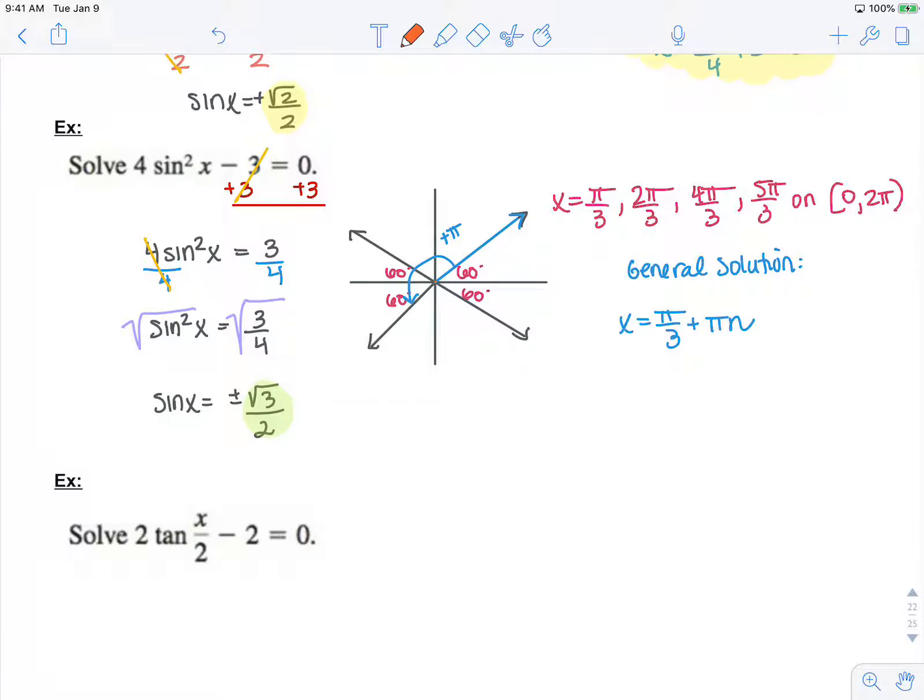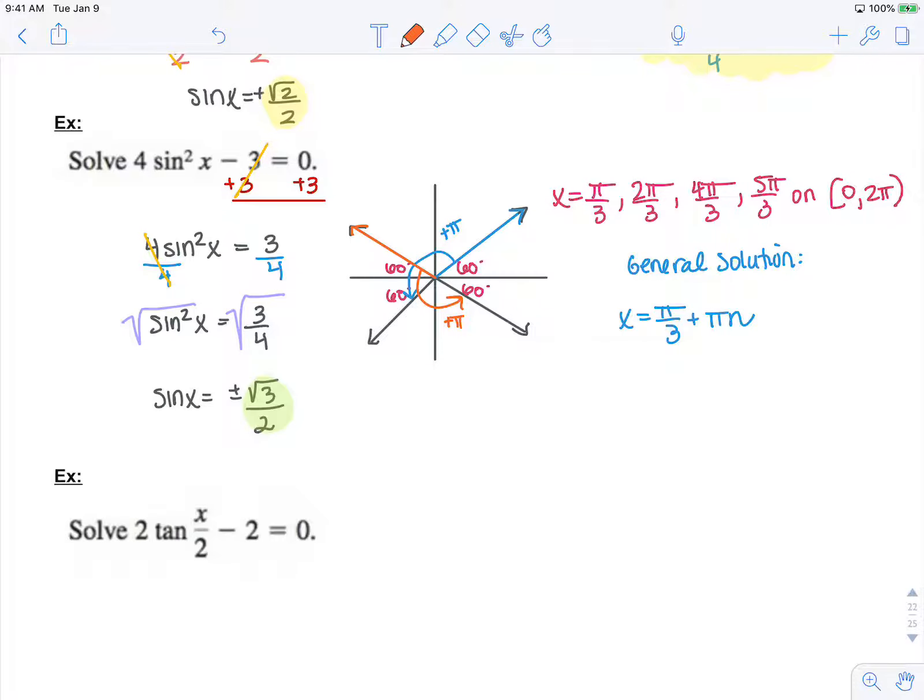And then if I go from this angle, all I've got to do is add pi, and I get all multiples of those. So x also equals 2 pi over 3 plus pi n.